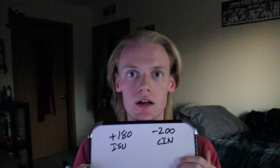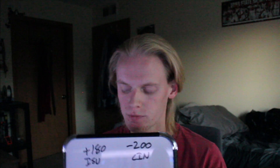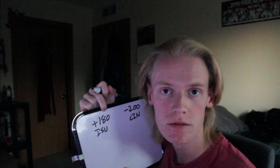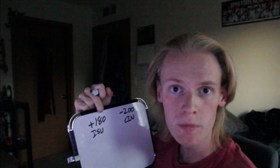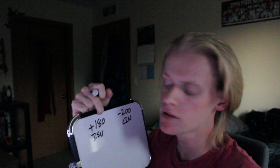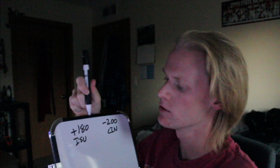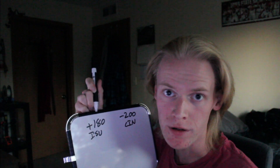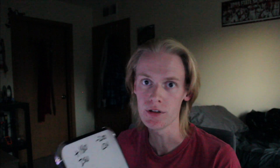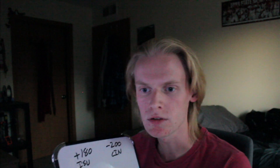You can think of the plus as at minimum doubling your money. The easiest way to think about it for plus odds is: if you bet $100, this is how much you would win in profit. So if you bet $100 on ISU and your bet wins, then you would win $180 profit — you would get your $100 back that you bet as well as an additional $180.